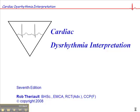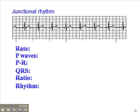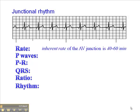On page 58 of your cardiac dysrhythmia interpretation book, you'll find junctional rhythms. Junctional rhythms are ones where the focus controlling the heart rate is either in the AV node, the AV junction — which is where the AV node connects to the bundle of His — or somewhere in the perinodal tissue. The inherent rate of the AV junction is between 40 and 60 beats per minute, because it's a backup pacemaker site.